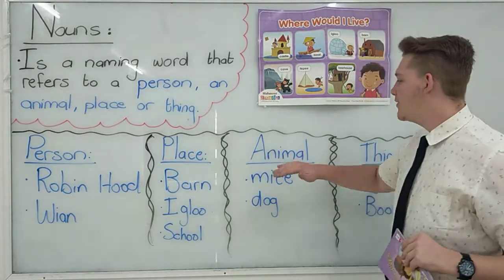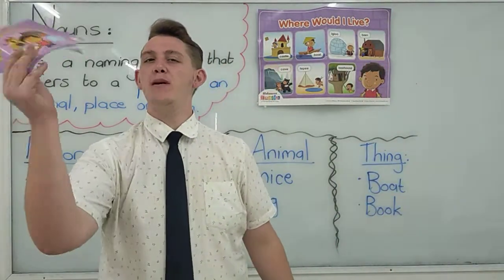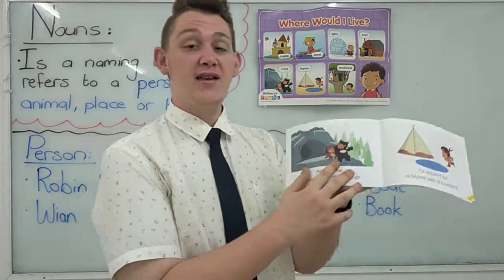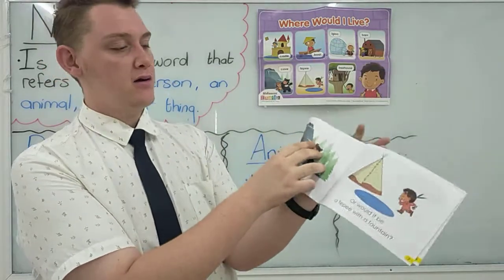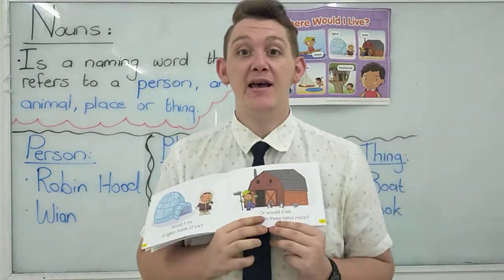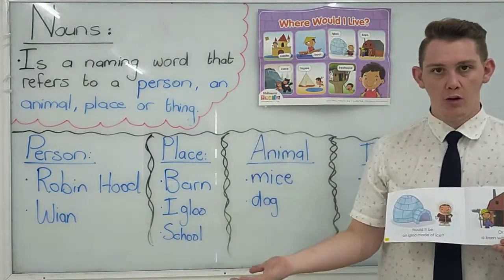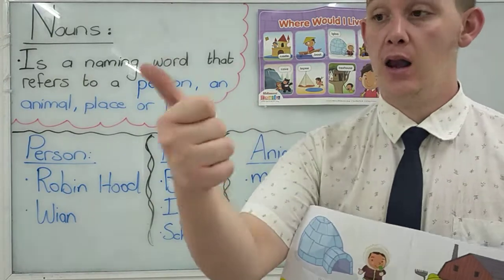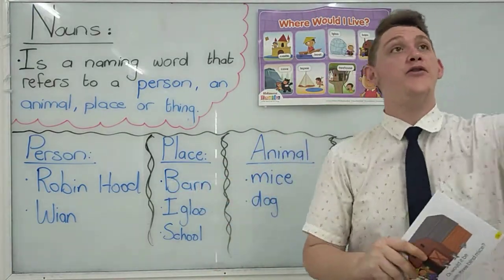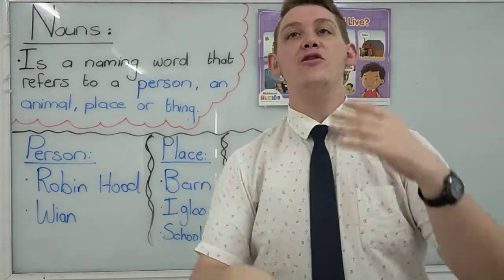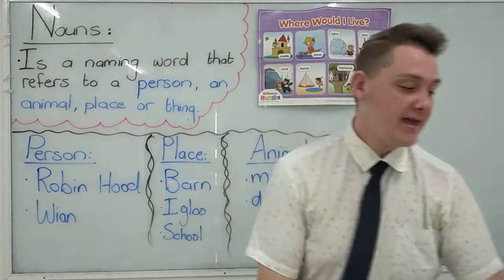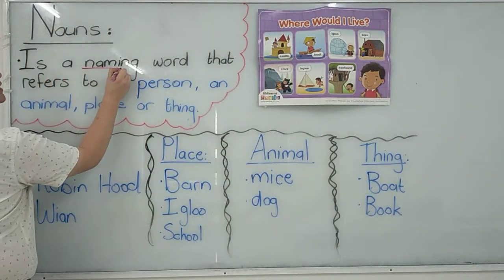So let's do animals. Animals are easy. What animals do you remember in the book? I know we saw a bear, but it didn't say 'bear' anywhere to be read. But what about these three blind mice? Mice is an animal. What other animals do you know? Lion is a noun, zebra is a noun, elephant is a noun, cow is a noun, pig is a noun, dog, cat — all the animals you can think of is a noun, because it is the naming word.